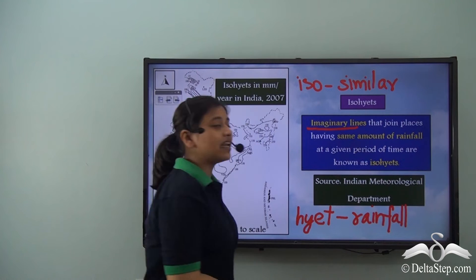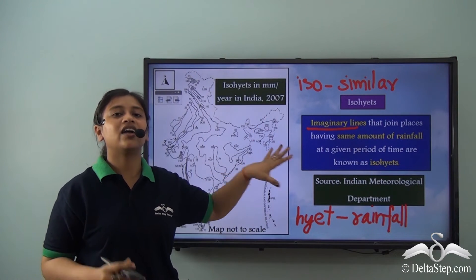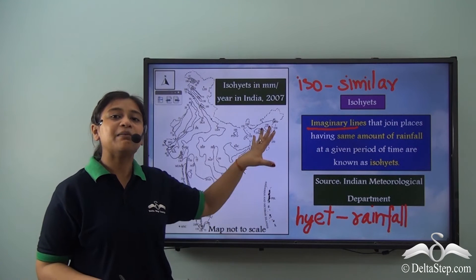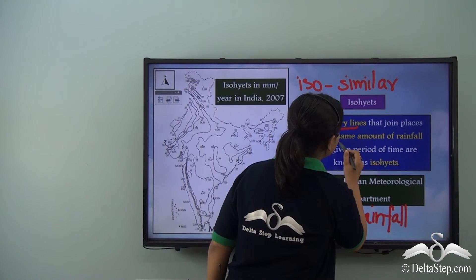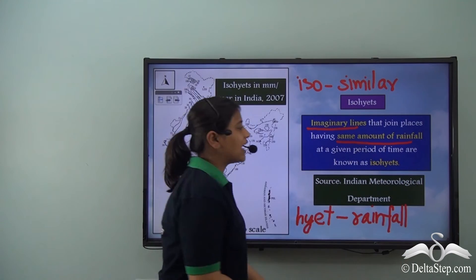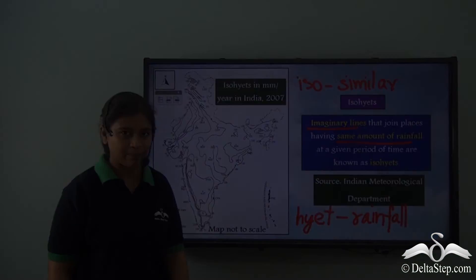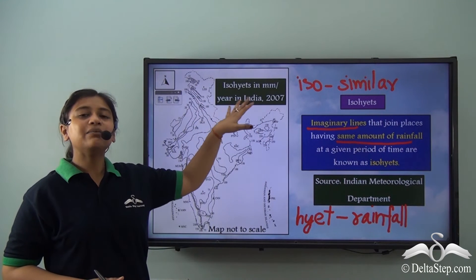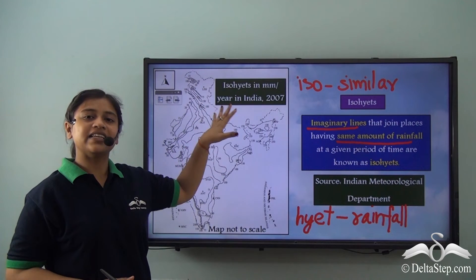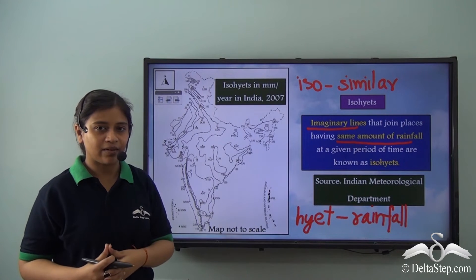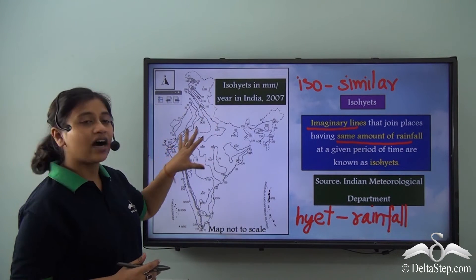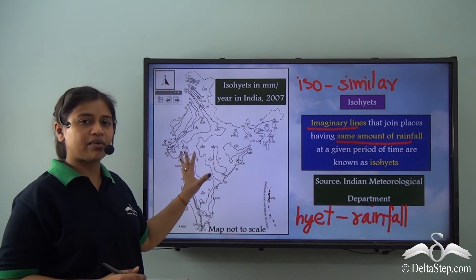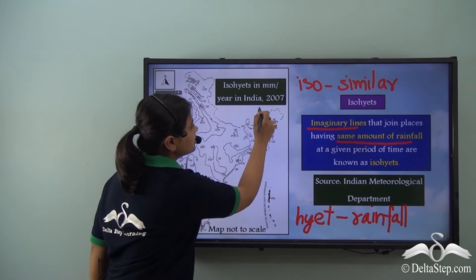You have to be very careful that isohyets are not visible lines — they are imaginary lines that join places having the same amount of rainfall at a given period of time. This is a map of India showing isohyets in millimetres per year in India in 2007. These isohyets are imaginary lines drawn on the map of India joining places having the same amount of rainfall in 2007.